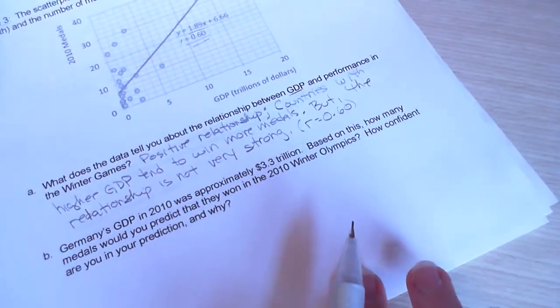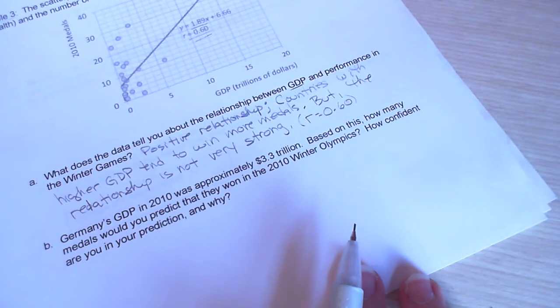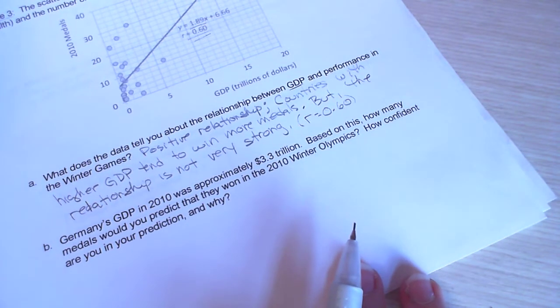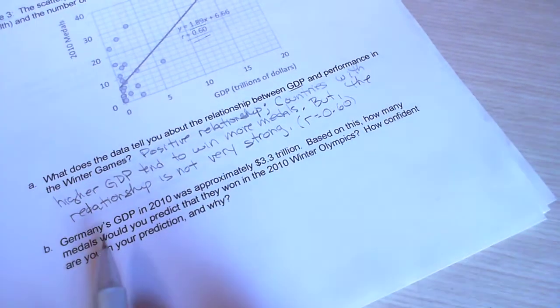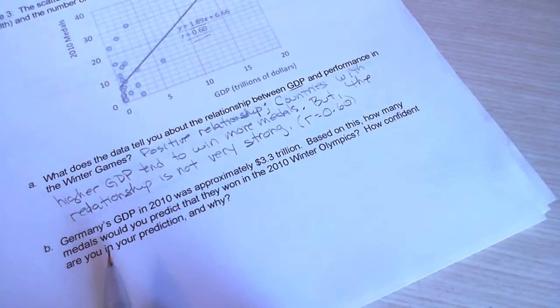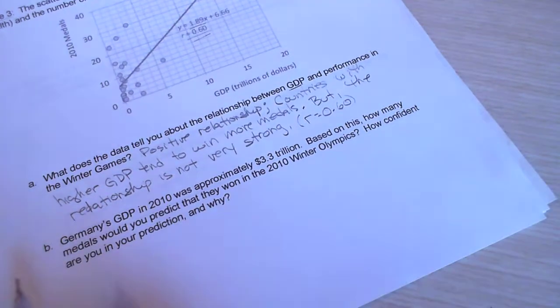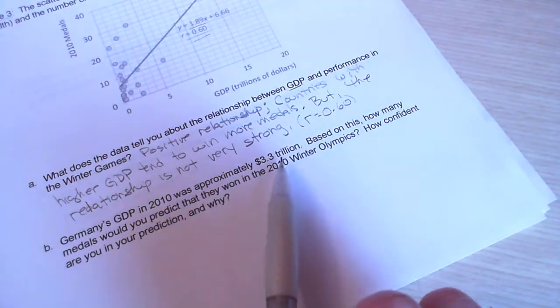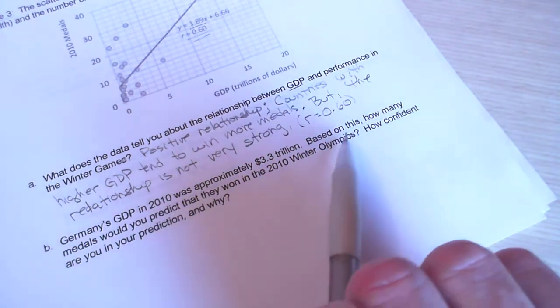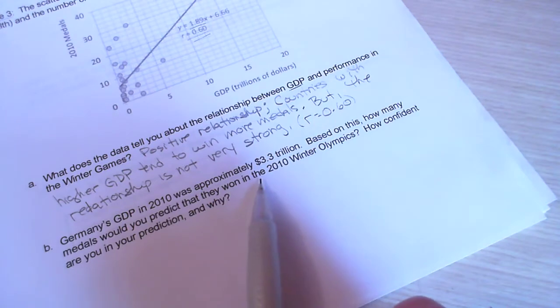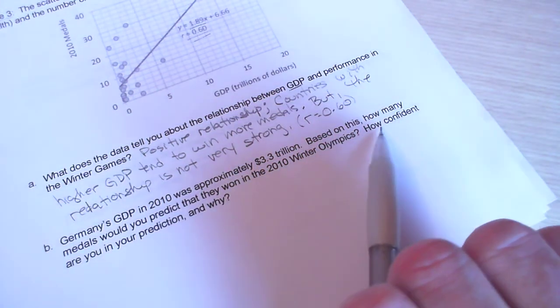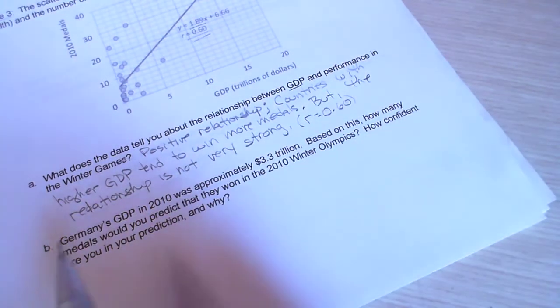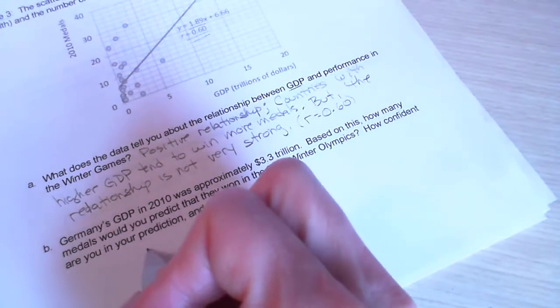So, it says, I think it's supposed to be Germany. Germany's GDP in 2012 was approximately 3.3 trillion based on this. How many medals would you predict they won in the 2012 Olympics? How confident are you in your prediction and why? So, we're going to say X is equal to 3.3 trillion.